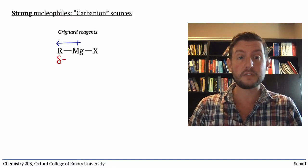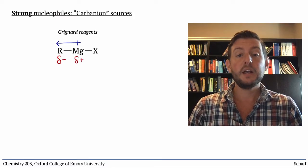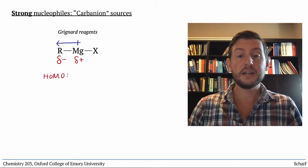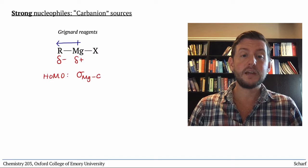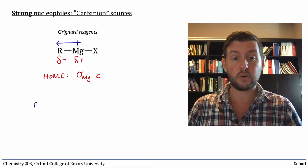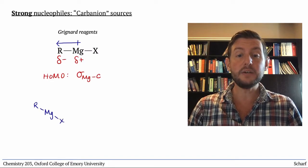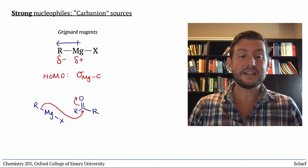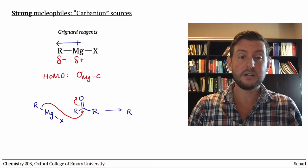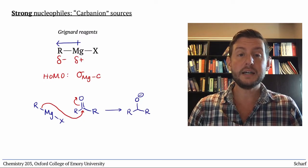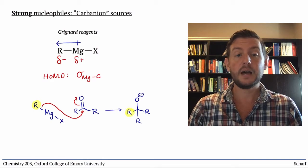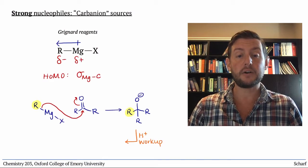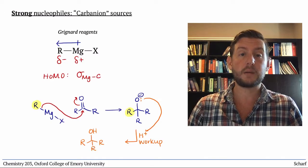The HOMO of these Grignard reagents is sigma-MgC. It's an excellent donor orbital and reacts with carbonyl groups like this. When sigma-MgC attacks CO pi star, we make a new carbon-carbon bond and push electrons up onto the oxygen. Again, we have an alkoxide, which we can turn into a neutral alcohol by adding a weak acid in a workup step.